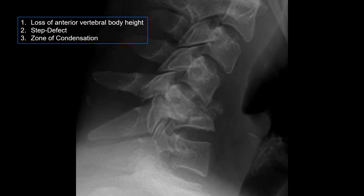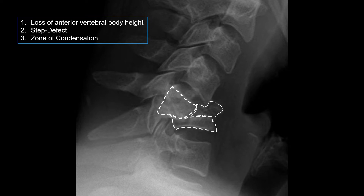Radiographically, there are three things that we're looking for with a compression fracture. First is a loss of anterior vertebral body height — the middle and posterior vertebral columns can also be involved in more serious injuries. Second, in an acute injury, you may see a step defect, which is an abrupt angle at the anterior aspect of the vertebral body representing acute fragmentation or deformity due to compression. Third is a zone of condensation, which is an area of impacted sclerotic bone.